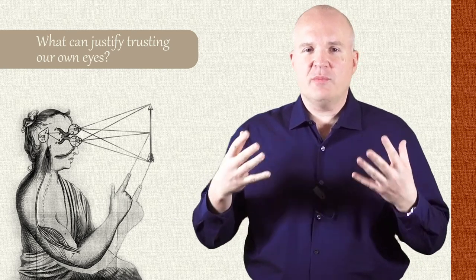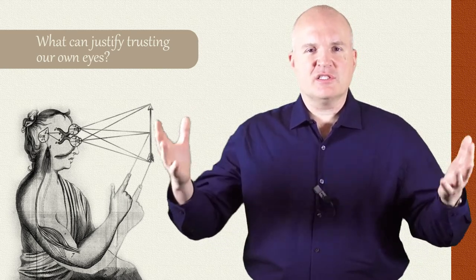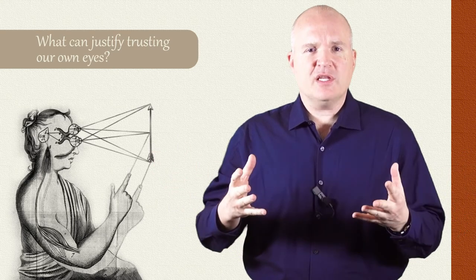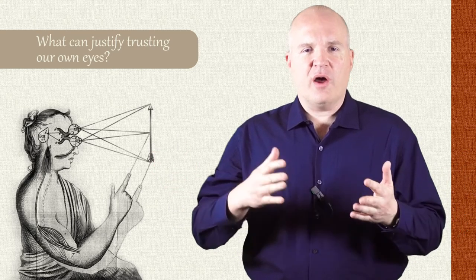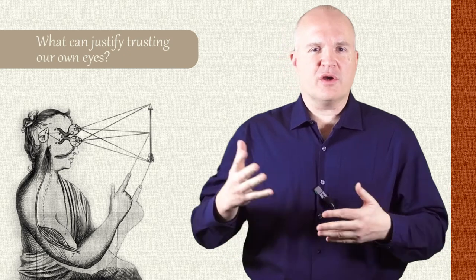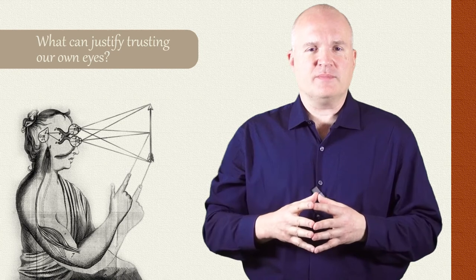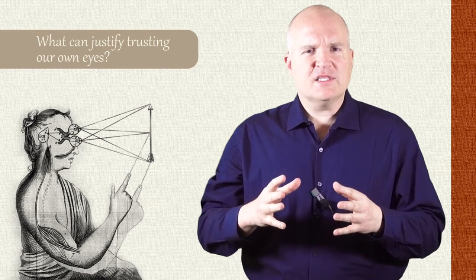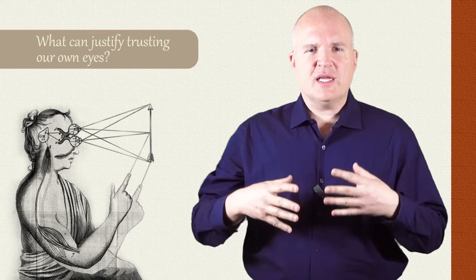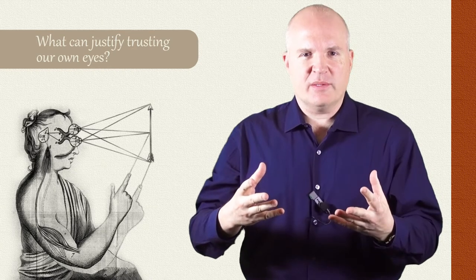Vision for human beings dominates our sense of the world. It really tells us where things are, how they're moving, how far away they are, what their colors and shapes are. It's an impressive psychological ability. Why is it so good? What explains the reliability of perception?